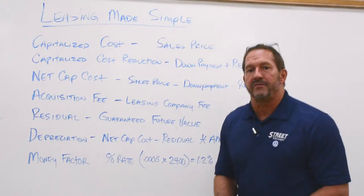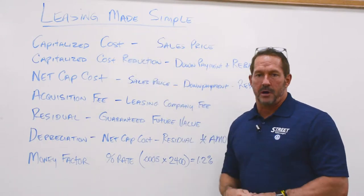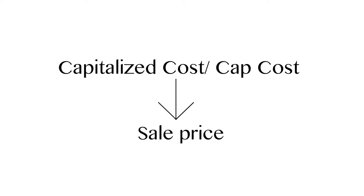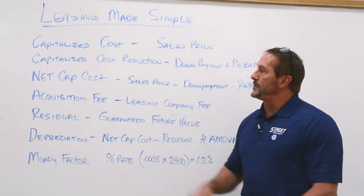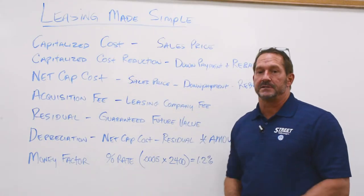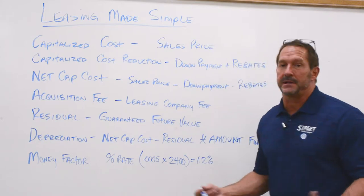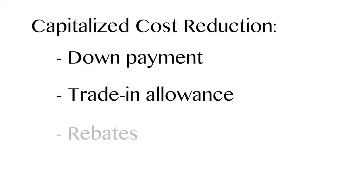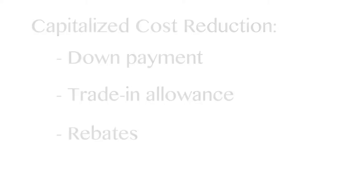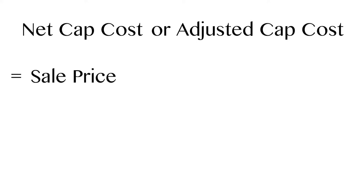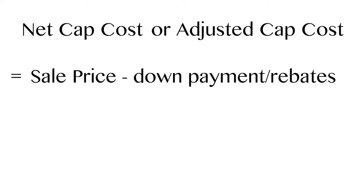We start off with capitalized cost. Capitalized cost is the actual sales price that you've negotiated for the vehicle. Next you have what's called capitalized cost reduction — a very fancy term for down payment, or anything that lowers the amount that you're going to be financing, which would be the down payment or rebates. Then you have the net cap cost, also called adjusted cap cost, which is the sales price less the down payment and rebates. That's basically the amount that you're going to be financing.